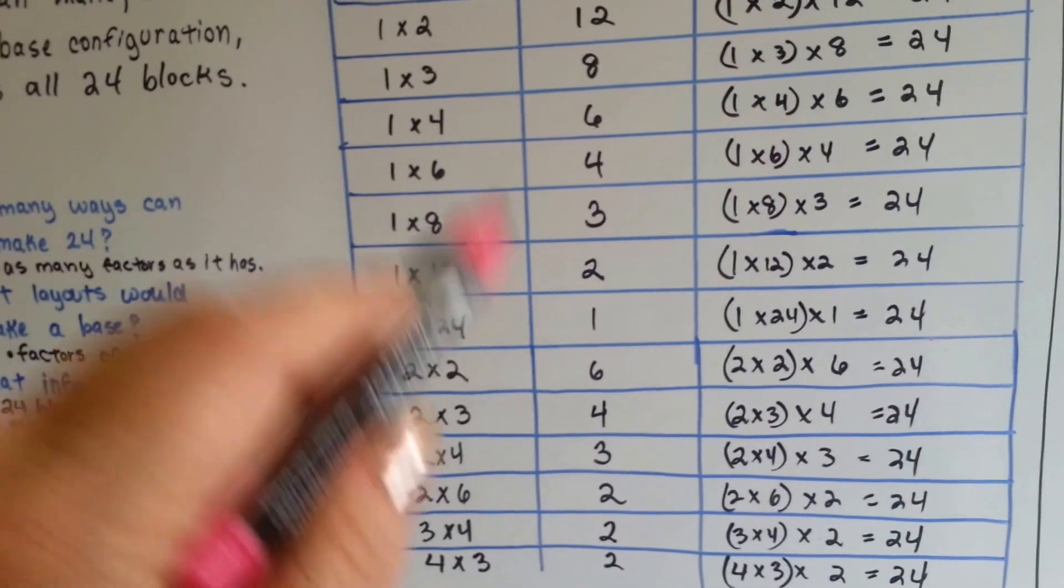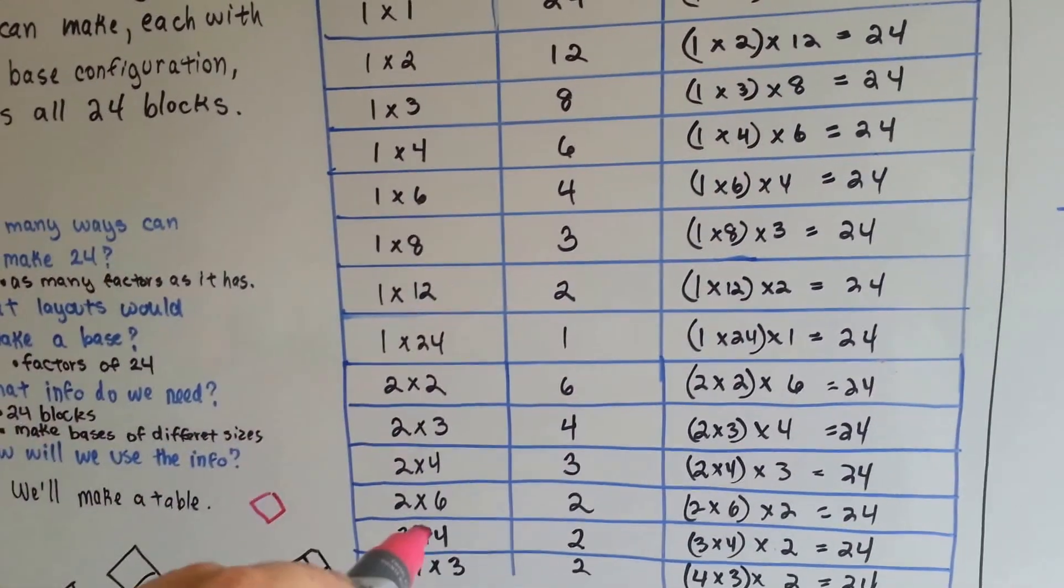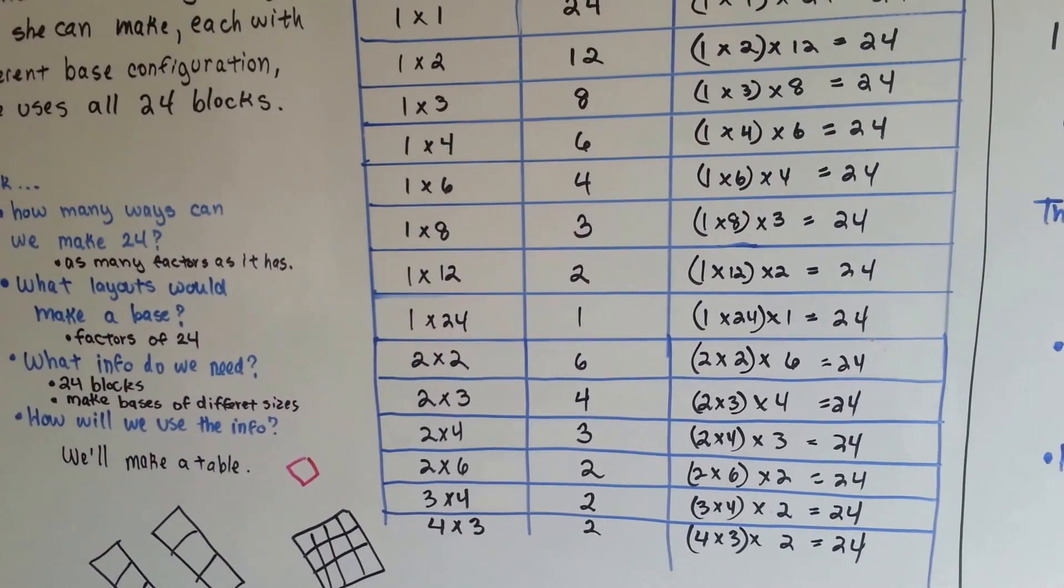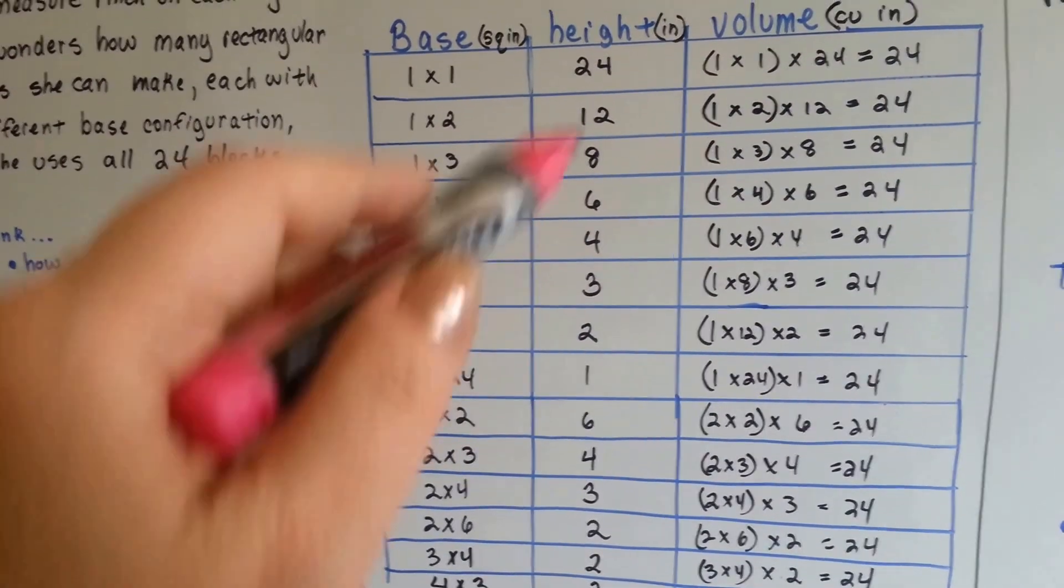Now this table can go on and on and on because she can have all different heights and all different base sizes. But the table helps show all the different ways. If we just tried to write them or think of them in our head, we wouldn't think of all of them.